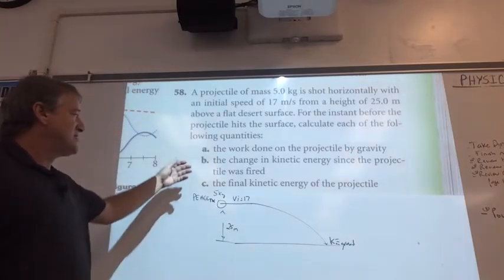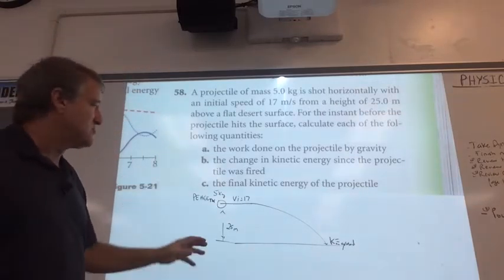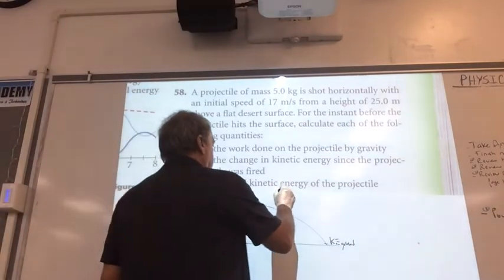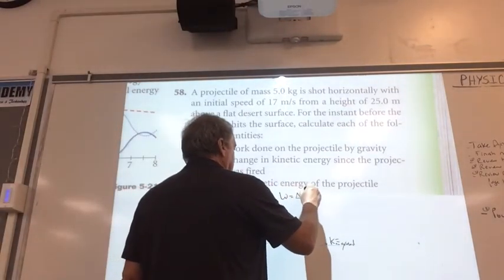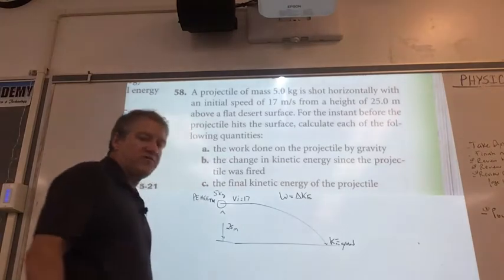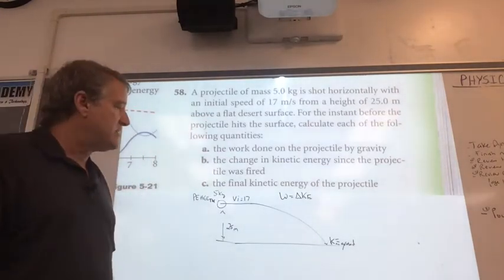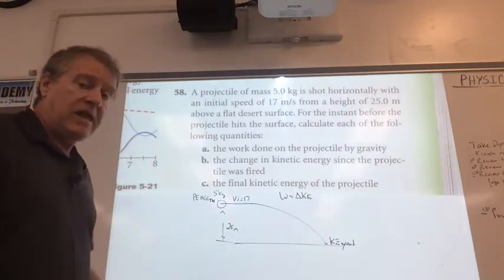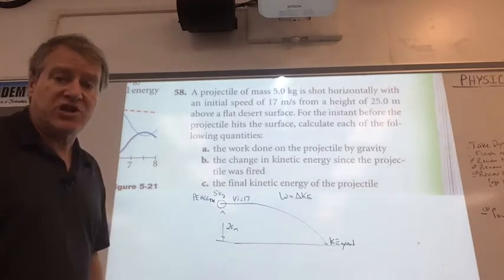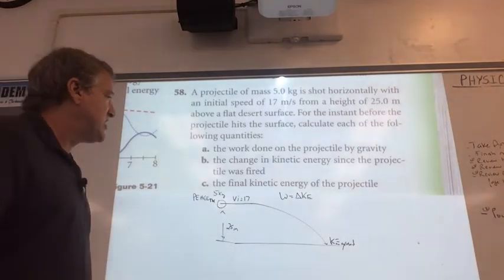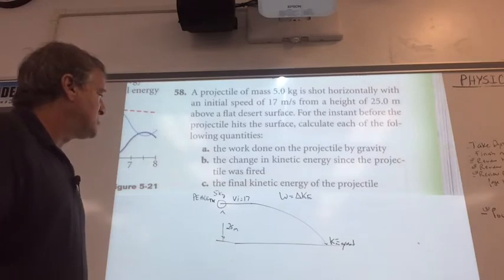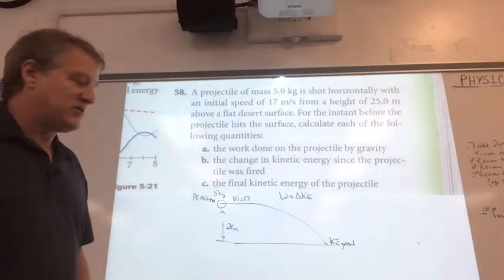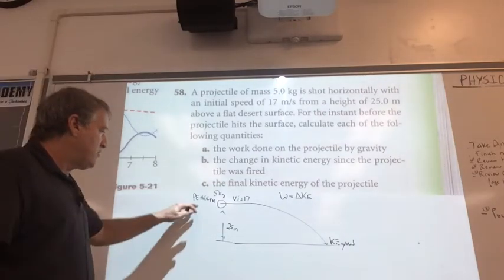We're actually going to solve b first to solve a, and here's why. We know that work is equal to delta KE. That's one of the equations we had in the chapter. The amount of work you do can be related to the change in kinetic energy, and b asks you what's the change in kinetic energy since the projectile was fired.